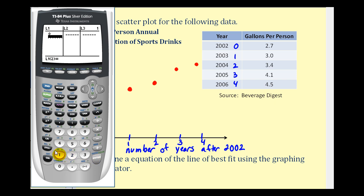So here we'll have zero, one, two, three, four. And then for L2, we'll have the gallons per person.